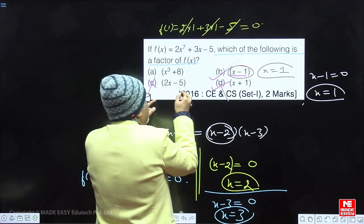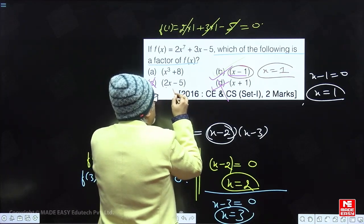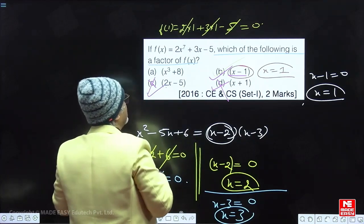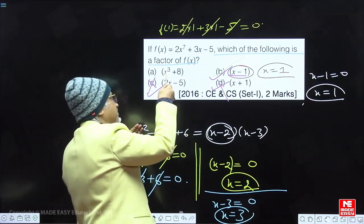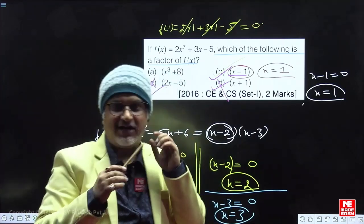2x minus 5 is equal to 0, x is equal to 5 by 2, 2.5. I should have tried it by 2.5 then. And finally, if none of them was working out, then x equal to minus 2 would have surely worked out anyhow.